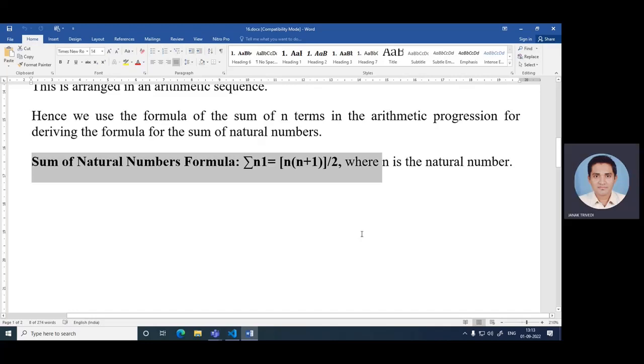To test the program for a different number, change the value of the number. Initially, the sum is initialized to 0, then the number is stored in a variable, and then we use a while loop to iterate until the number becomes 0.